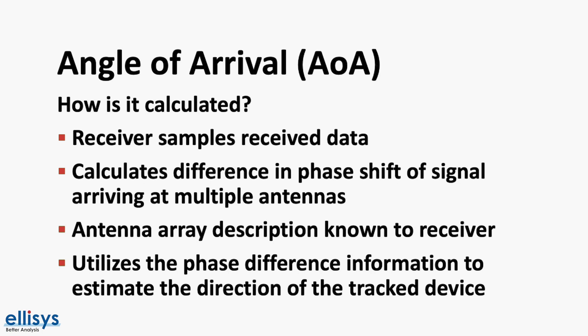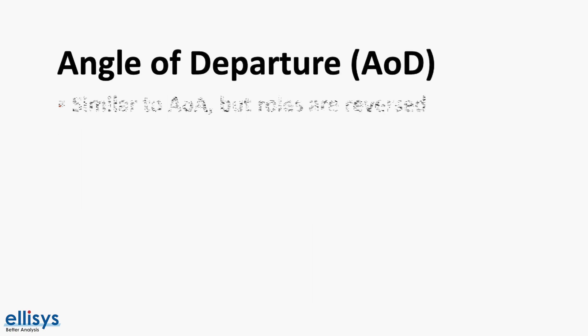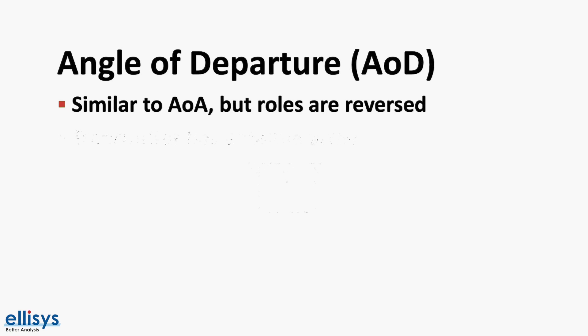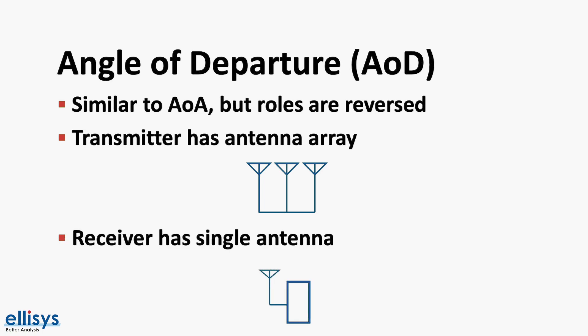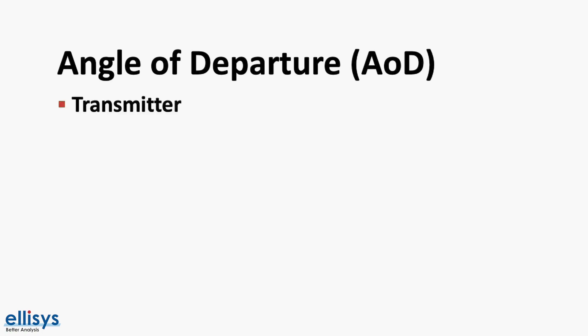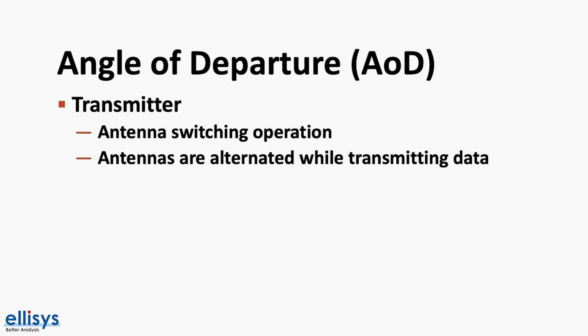In the case of angle of departure, it is similar to angle of arrival, but the roles are reversed. Here, the transmitter is the device equipped with multiple antennas, and the receiver has only a single antenna. In the case of the transmitter, it will perform an operation called antenna switching. The basic concept behind antenna switching is to use a single antenna at a time to transmit the signal, then switch to the next antenna in the array, and so on.